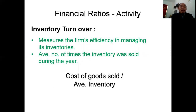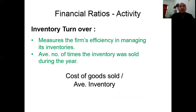Inventory turnover measures the firm's efficiency in managing its inventory. The company should sell its inventories and should not hold them too long in the warehouse. This is the average number of times the inventory was sold during the year. The formula is: cost of goods sold divided by average inventory.